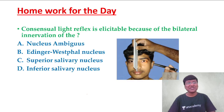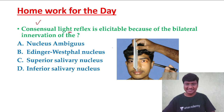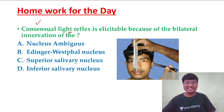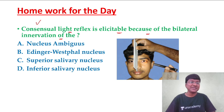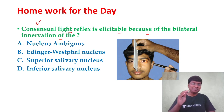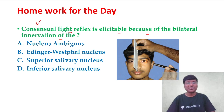Having said this, what is the homework of the day? Consensual light reflex — whatever is being elicited in the individual — is elicitable because of bilateral innervation of which particular structure? The options are: nucleus ambiguus, Edinger-Westphal nucleus, superior salivary nucleus, inferior salivary nucleus. Please answer this question in the comment box and I will revert back to you with the correct answer.